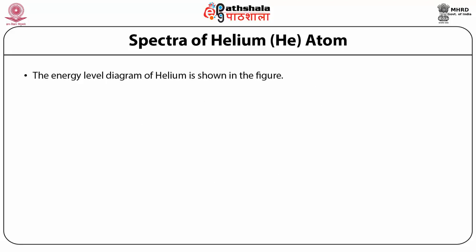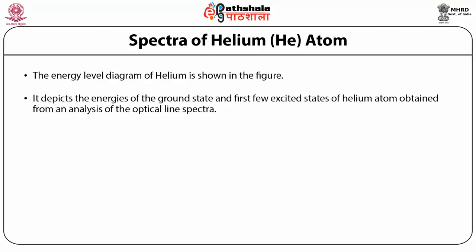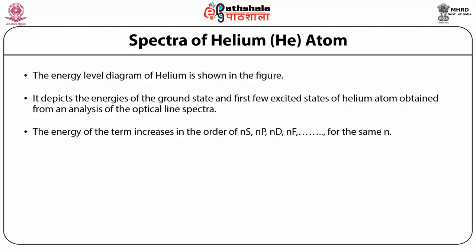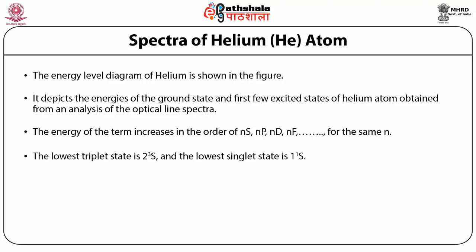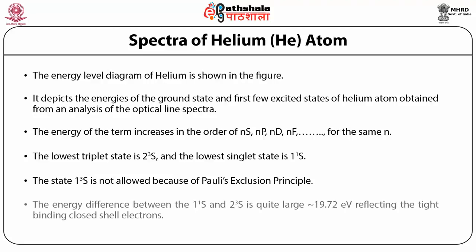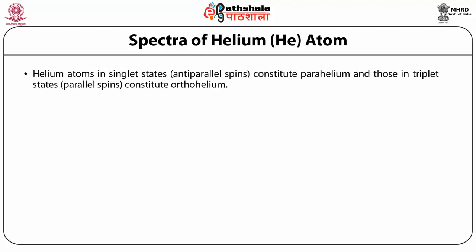The energy level diagram of helium depicts the energies of the ground state and first few excited states obtained from analysis of optical line spectra. The energy of the term increases in order ns, np, nd, nf for the same n. The lowest triplet state is 2³S and the lowest singlet state is 1¹S. The state 1³S is not allowed because of Pauli's exclusion principle. The energy difference between 1¹S and 2³S is quite large — 19.72 eV — reflecting the tight binding of closed shell electrons.